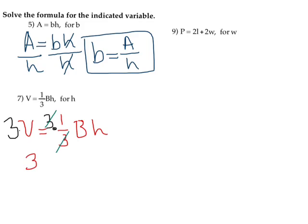So, I now have 3V equals BH. Now, this is similar to what we did in the example up there that I called number five. Well, 3V equals BH. How do I get each by itself? Well, I need to divide both sides by B.